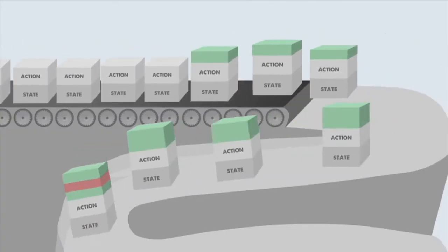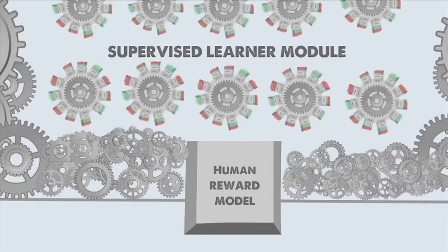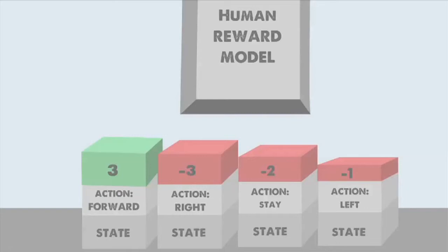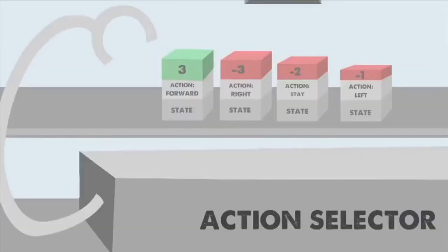As new learning samples arrive, the human reward model is updated. The action selector module uses the most recent model to predict how much reward will be given in the current task state and opts for the action it expects to elicit the greatest reward.